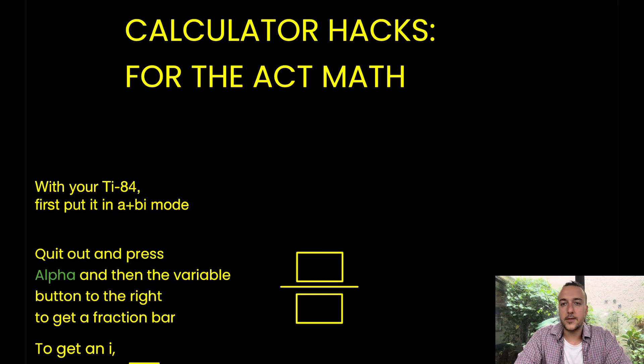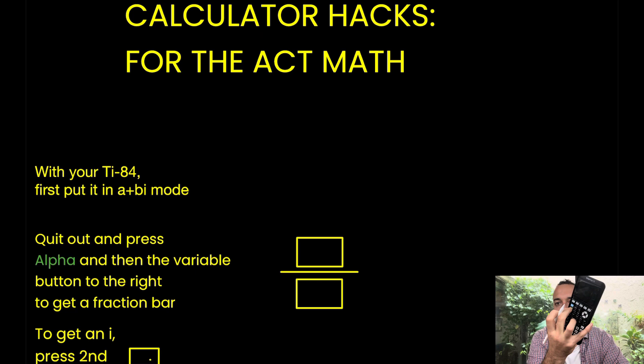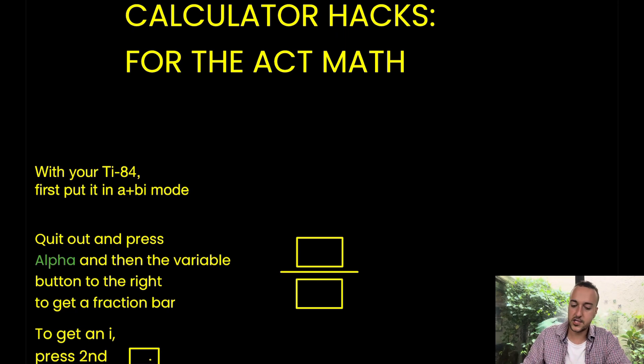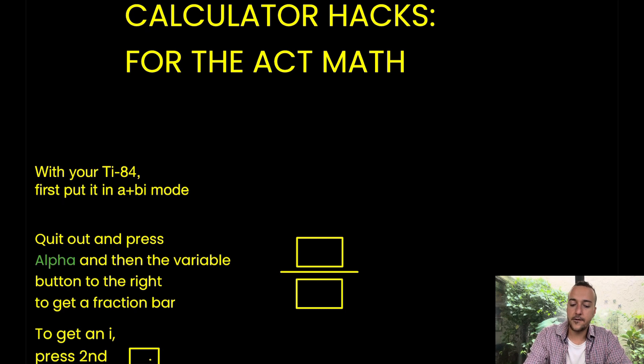Now that your calculator is in A plus BI mode, I want you to quit out. Really, you're just going to press second mode, quit out, and then press the alpha variable button. So first press that alpha green button right there. My middle finger is pressing that alpha green button, and then press the button right next to it, really the variable button, just the X button. That should give you a fraction bar.